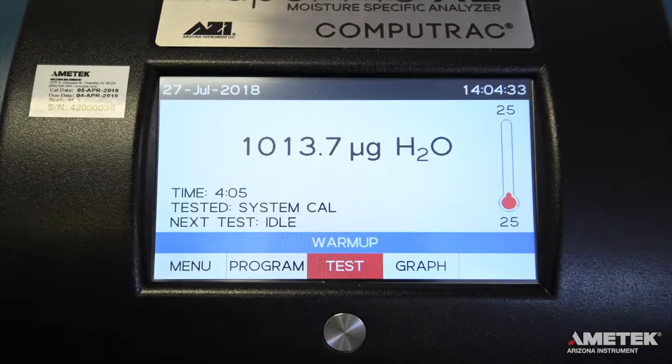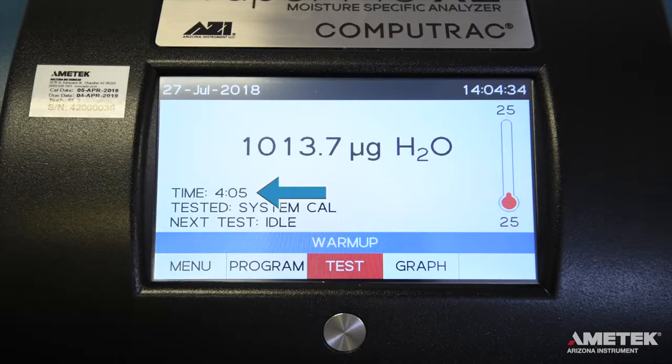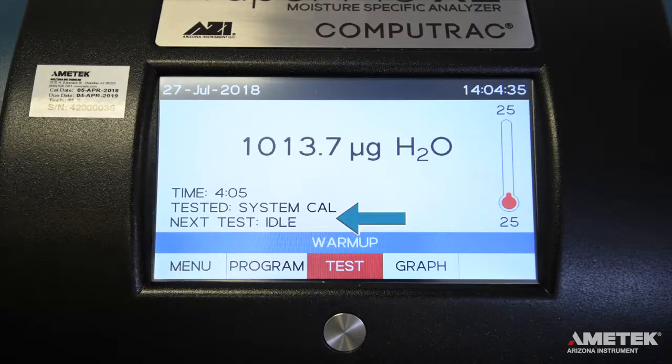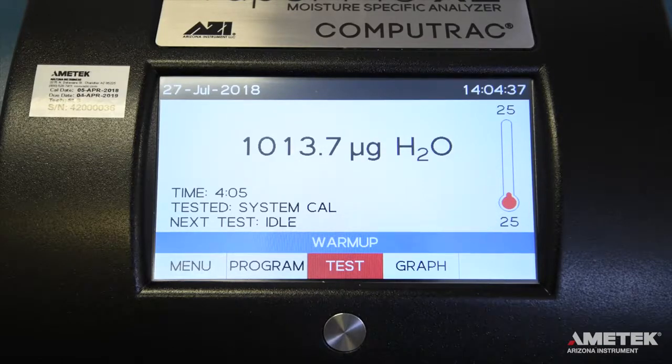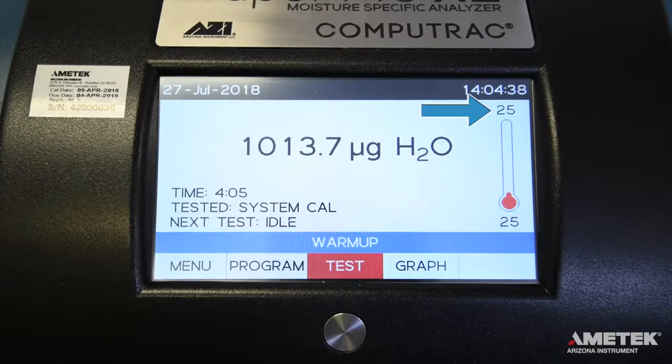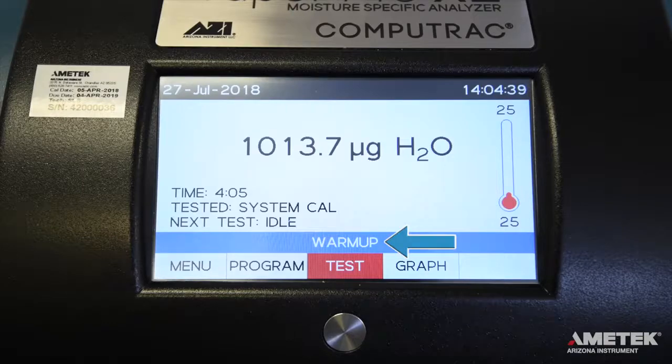The main screen displays the length and result of the last test, the previous and next test program, the current oven temperature, the test temperature for the next test, and the current system status.